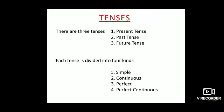Hello students, in this lecture we are going to study the tenses. In English there are 12 tenses — simple present tense, present tense, past tense, and future tense. All these are divided into four kinds each: simple, continuous, perfect, and perfect continuous. With the mixing of these kinds, the total comes to 12 tenses.